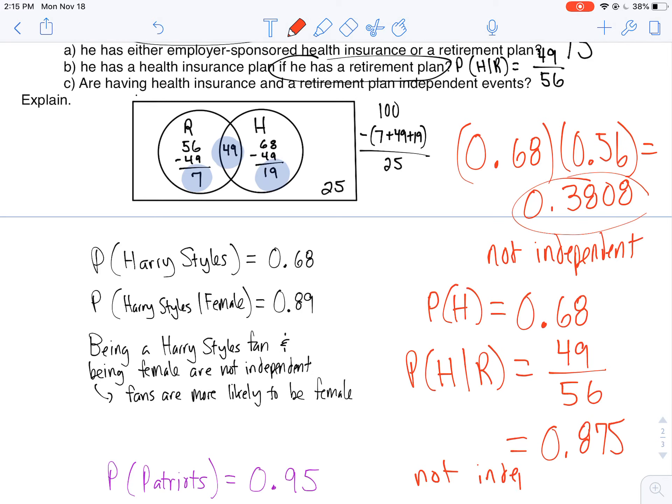Now what does that ultimately mean? Well, it's telling me that if I have a retirement plan, I'm more likely to have health insurance as opposed to just randomly selecting an American worker and seeing if they have health insurance. That's what independence essentially means. Is your probability gonna be the same once you ask your whole group as opposed to a subgroup? Are you getting the same probability? In this case we didn't. We got 0.68 versus 0.875. So they are not independent events.